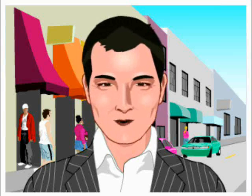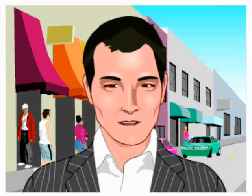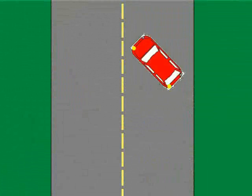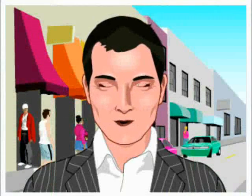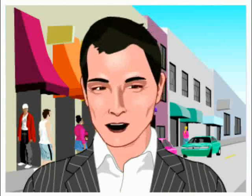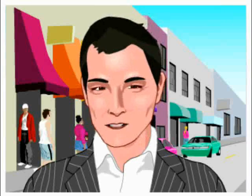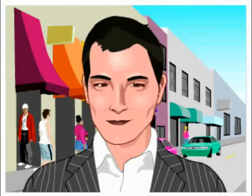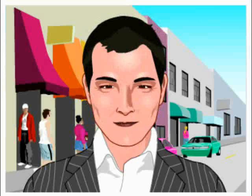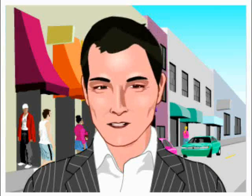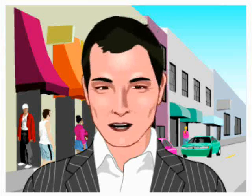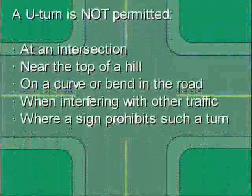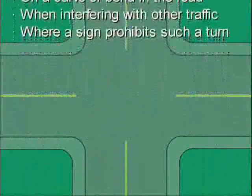Scenario 9 of 9. U-turns. A U-turn should be made only under the following conditions: the road must be wide enough to allow a turn in just one swing, and you must be able to see far enough to the front and rear of your vehicle to make sure no other traffic is near. If you want to make a U-turn in an area where U-turns are permitted, you must first stop the car on the extreme right side of the road, signal a left turn, check in front and rear for traffic including your left blind spot, and turn your wheel sharply to the left. Then move the car carefully across the road and complete the turn. A U-turn is not permitted at an intersection, near the top of a hill, on a curve or bend in the road, when interfering with other traffic, or where a sign prohibits such a turn.